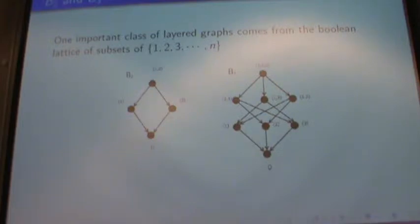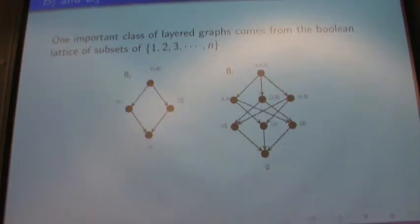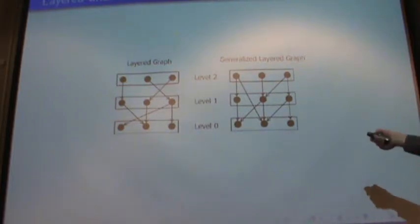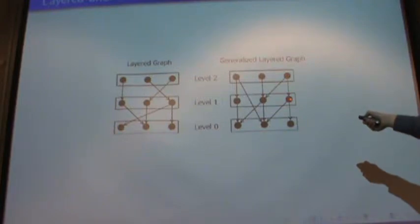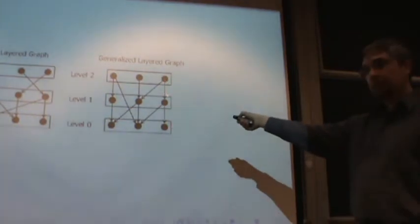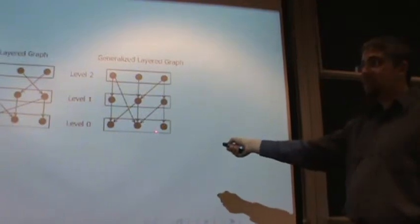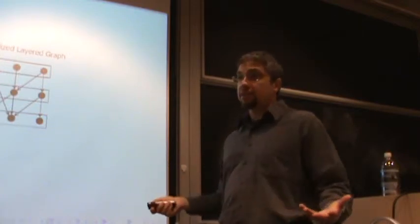One important class of layered graphs we're going to be talking about are the Boolean lattice of subsets. The difference between a layered graph and a partially ordered set is that in a Po set, transitivity is assumed — if this is bigger than this and this is bigger than this, then this is bigger than this. But in the graph, we actually have the edges, so we have an edge relation between adjacent vertices but no relation between non-adjacent ones. We're not assuming transitivity, we just have these edges between vertices.